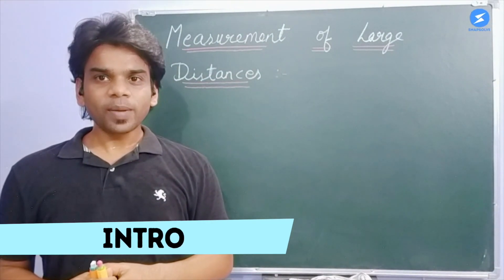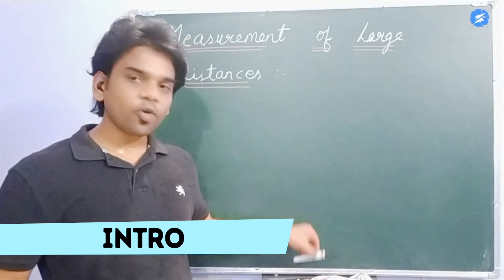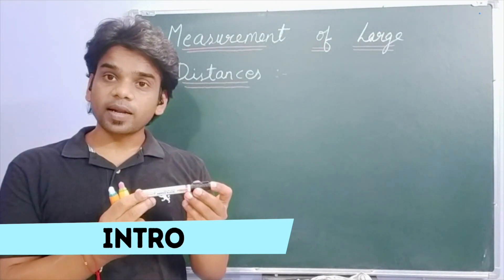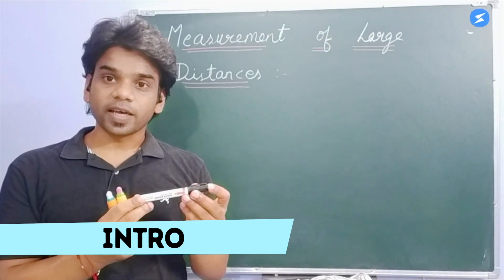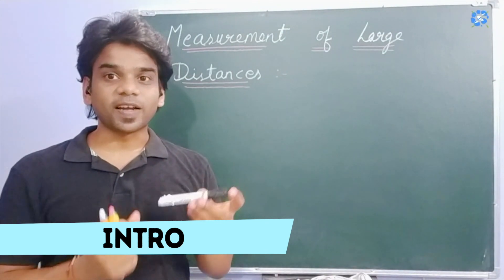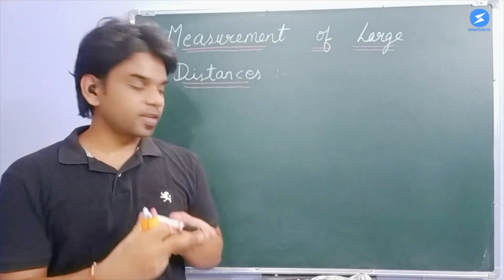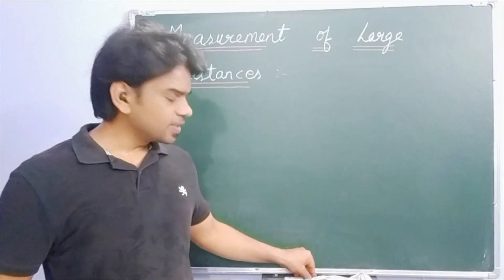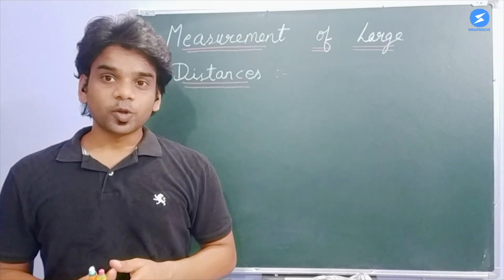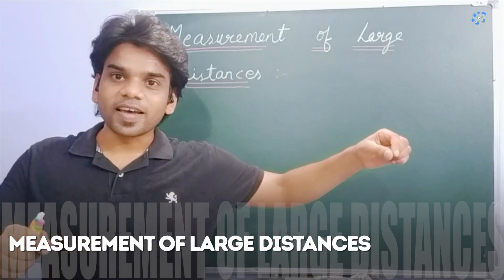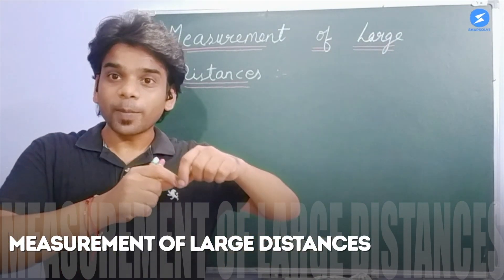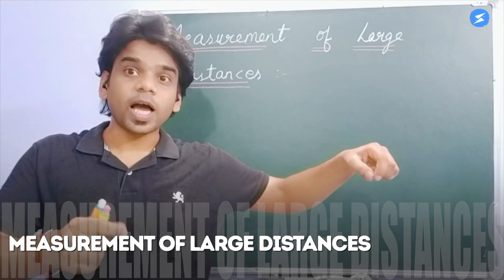First of all, I want to tell you that if we have to measure a finite distance — like if we have to measure this marker length — we will use a 1 meter scale and we will measure the distance easily. Similarly, if you have a study table and you have to measure its length, then take a 1 meter scale or a tape measure, and you can measure the length easily.